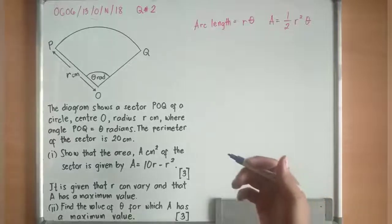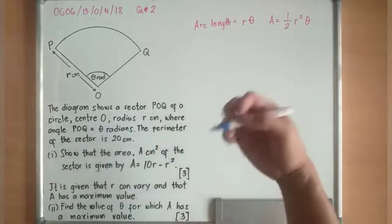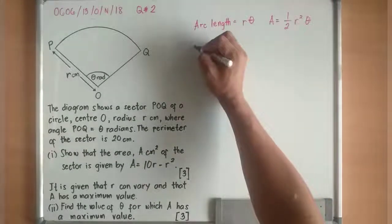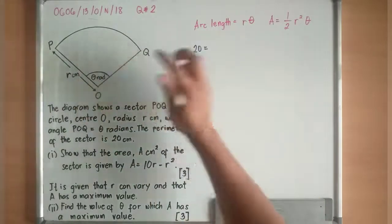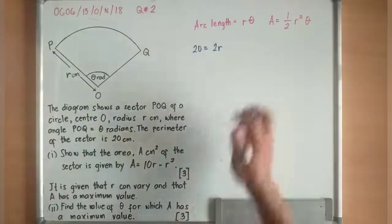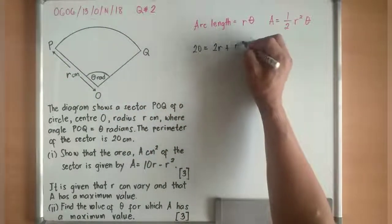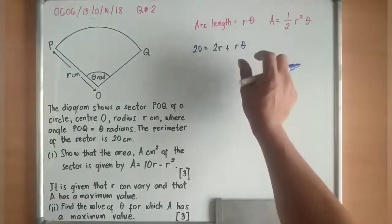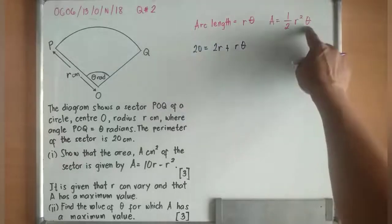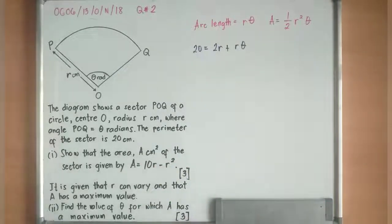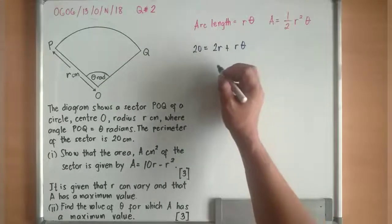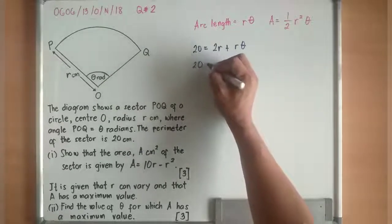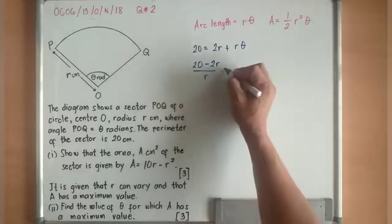Use the idea that the perimeter is 20 cm. So 20 equals R plus R plus the arc length, which is R theta. Let's make theta the subject of the formula so that later we can substitute the value of theta into the area.